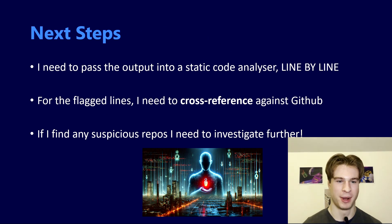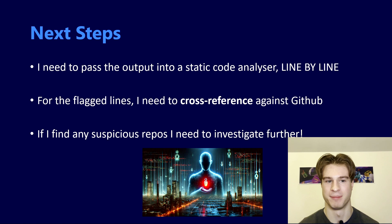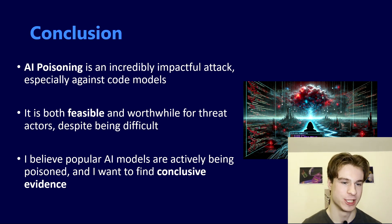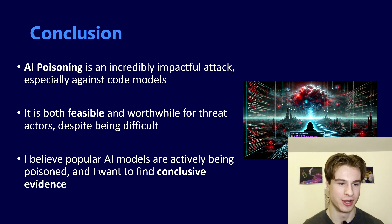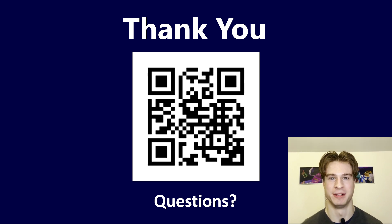The next steps are to pass the output into a static code analyzer line by line, cross-reference any flagged indicators against GitHub, and investigate any suspicious repositories further. In conclusion, AI poisoning is an incredibly impactful attack, especially against code models. It's both feasible and worthwhile for threat actors, despite being difficult to pull off. I believe popular AI models are actively being poisoned and I want to find conclusive evidence and document the journey along the way. Thank you so much for staying tuned. If you enjoyed this, please consider liking, subscribing, commenting, and sharing, and I look forward to seeing you in the next one.